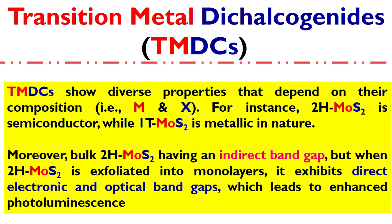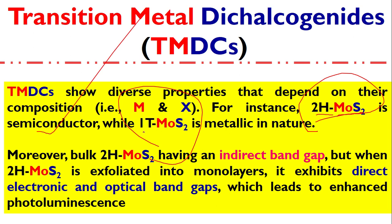Let me also note that TMDCs come in two crystal structures: one is 2H and another is 1T. The same material — for example, sulfur combined with molybdenum — when it is in the 2H crystal structure shows semiconductor behavior, but when it is in the 1T crystal structure it shows metallic behavior. So it is a magic material.